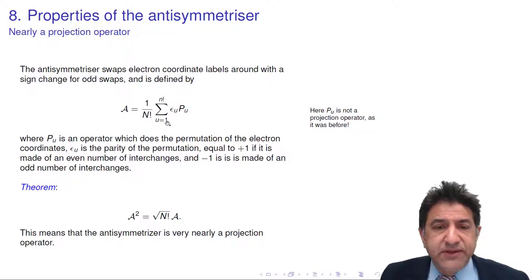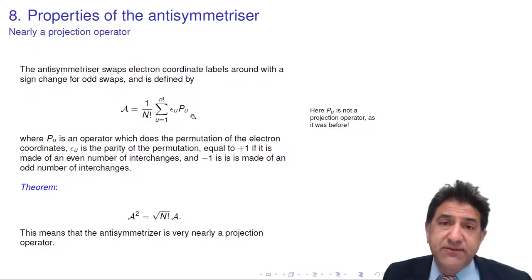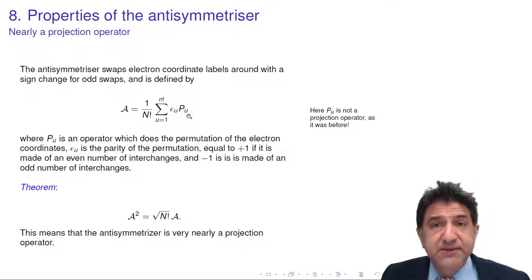And we have here a sum over all n factorial terms of permutations, because if we have four labels, we have four factorial possible permutations that we can do. So this sums over all permutations labeled by Pu. P1 is the first permutation, which would be a no permutation. P2, P3, or whatever.